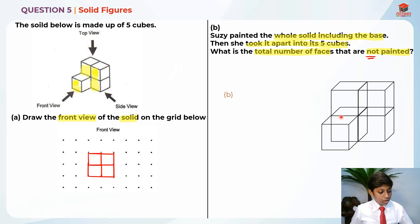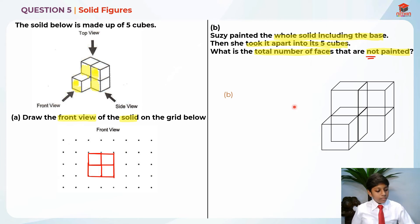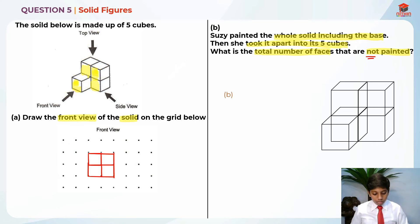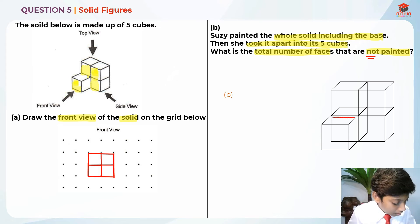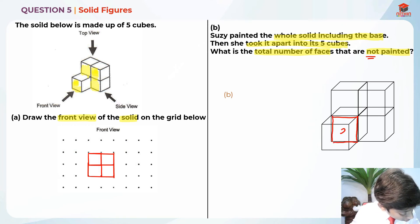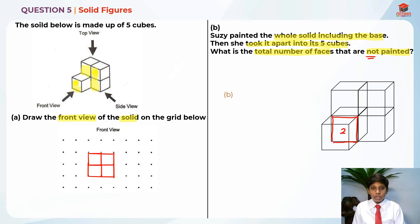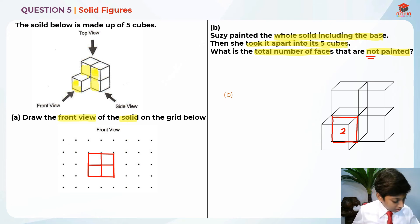Not painted means the faces that are touching each other. I've drawn the solid here where you can see the faces inside. Not painted means the faces are touching each other — so in that case it is not painted. That's the rule. So let's find the first one that is touching. This face is touching — that means there are two faces unpainted. Because when they're touching each other and you take it apart, there are actually two faces here and here which are not painted.